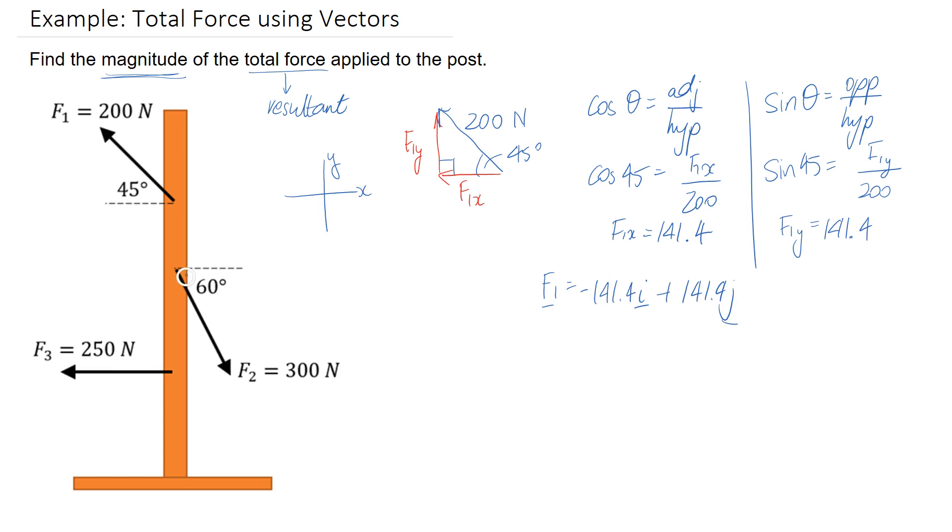So we've successfully converted this one here to go from a magnitude and direction into a vector form, where we have a horizontal and a vertical component. So let's go ahead and do the same thing now for F2. This one looks like this. We know that the hypotenuse here has a length of 300 newtons, and we can divide it into a horizontal and vertical part. So let's call this F2x and this F2y, and we can mark in our angle here of being 60 degrees.